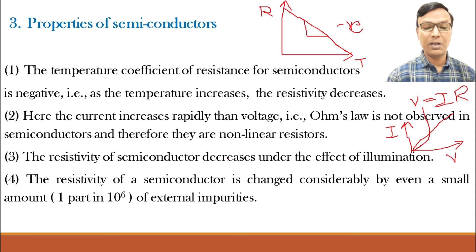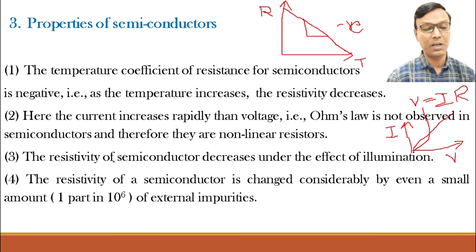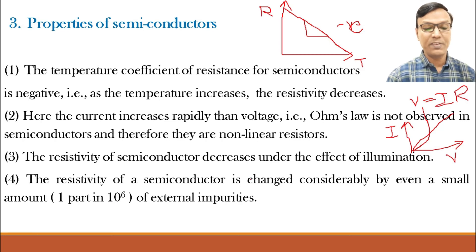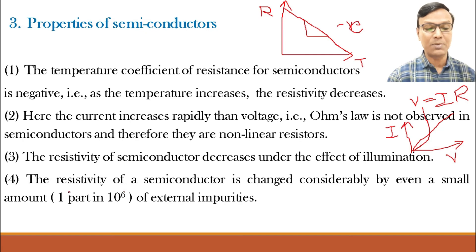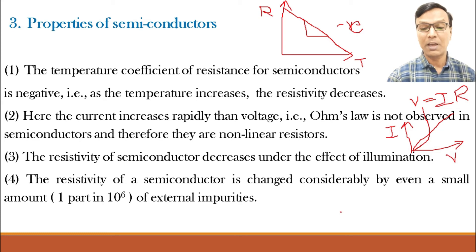The resistivity of a semiconductor decreases under the effect of illumination. When light falls on semiconductor materials, its resistivity decreases and conductivity increases. This is also a very important property which is used in applications like light dependent resistors, etc. The resistivity of a semiconductor is changed considerably by even a very small amount of external impurities. This is also a very important property of semiconductor.